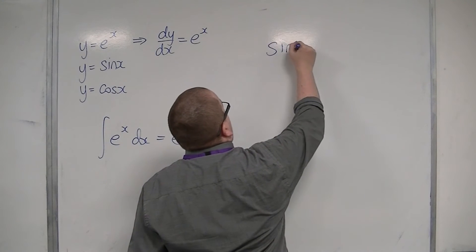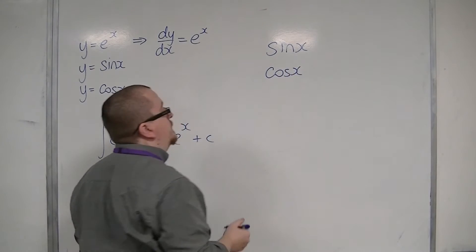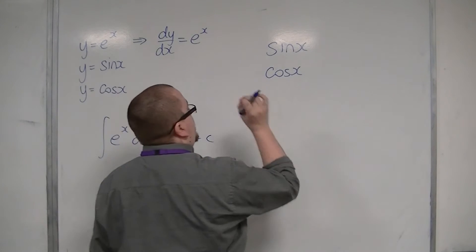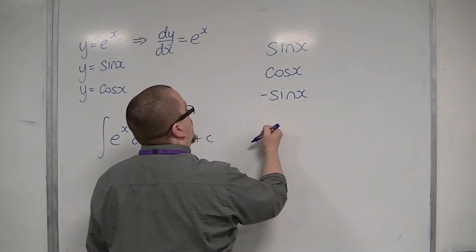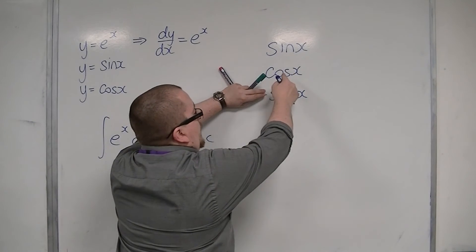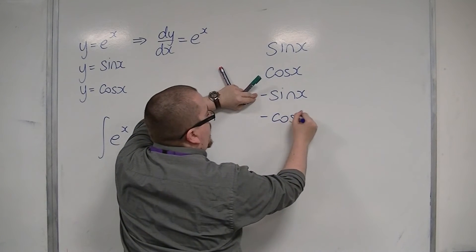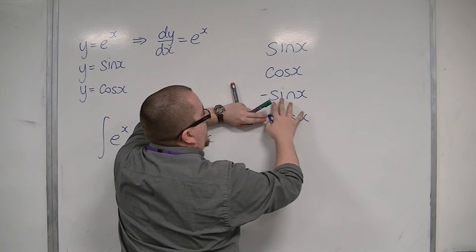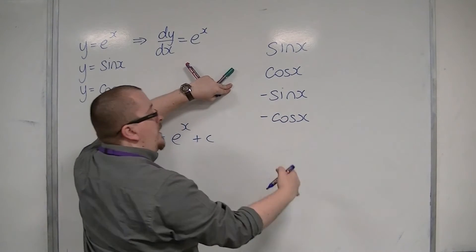Sine x differentiates to cos x. Cosine x differentiates to minus sine x. Now, if sine differentiates to cosine, then minus sine must differentiate to minus cosine. And if cosine differentiates to minus sine, then minus cosine must differentiate to sine.